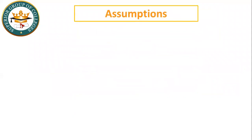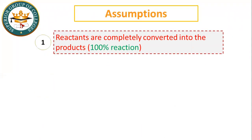Dear students, these are the assumptions of stoichiometry. The first assumption is that reactants are completely converted into products. All reactants are 100% converted into products — when the reaction starts, all reactants are consumed and converted into products.